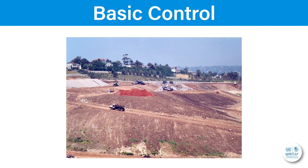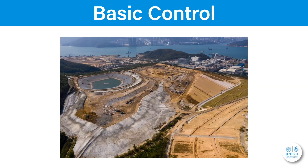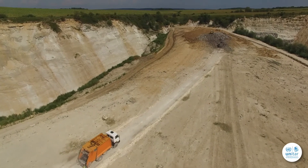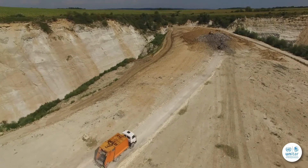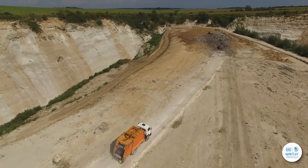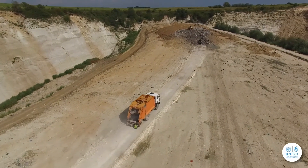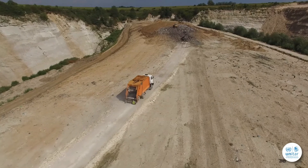Another approach is to start by restricting the waste tipping face. The tipping face is the part of the disposal site where waste is currently being disposed — the open uncovered area where trucks discharge their waste. The smaller the tipping face, the less likely are pollution impacts. To ensure a small tipping face, a clear tipping schedule and site plan is required, as well as regular covering with soil of the waste sections not at the tipping face. This avoids emissions to the environment and hinders waste being blown away by wind.